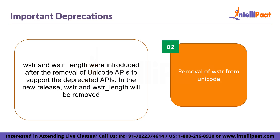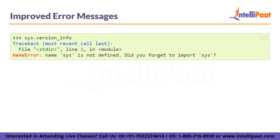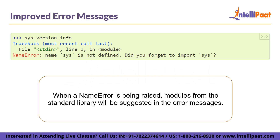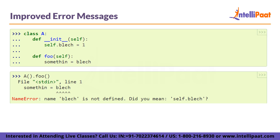Now let's take a look at the improved error messages in Python 3.12. The first one is the name error. When a name error is raised, modules from the standard library will be suggested in the error messages, as you can see in the image here. In previous releases, the suggestion 'did you forget to import sys module' was not given, and this is a very good highlight being introduced in Python 3.12. Similarly, in the case of a name error raised in a method, the attribute name will be displayed in the suggestion as self.name — for example, 'did you mean self.like'.